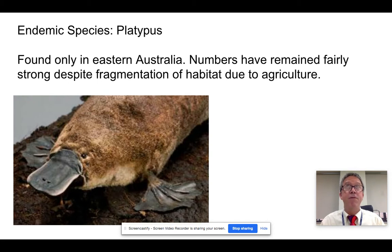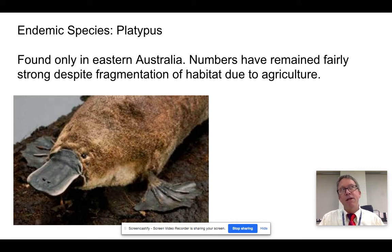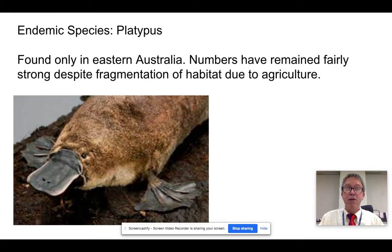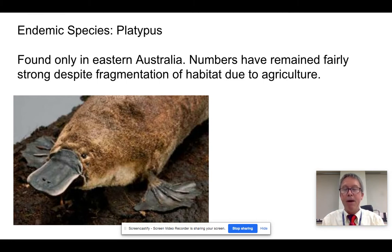Australia is just full of endemic species, for reasons we'll see. The platypus is a really famous one, and it has done well despite the fact that humans have moved in and fragmented the habitats quite a bit. If you have different areas that are fairly closely connected, species can get by — that's the case with the platypus.